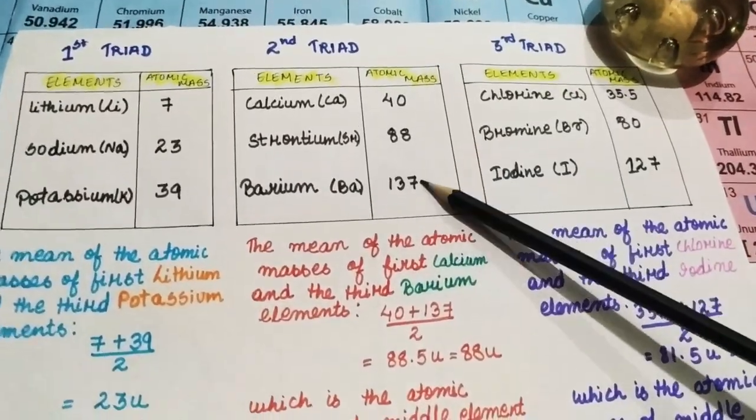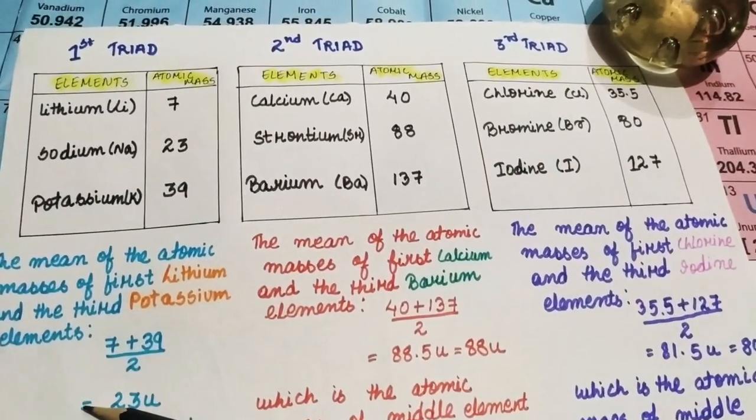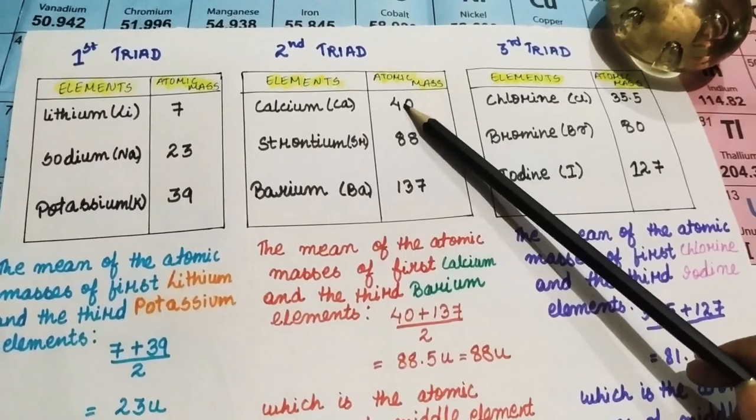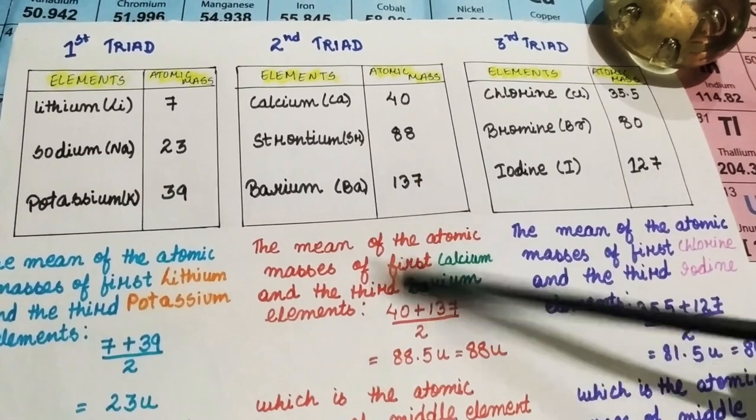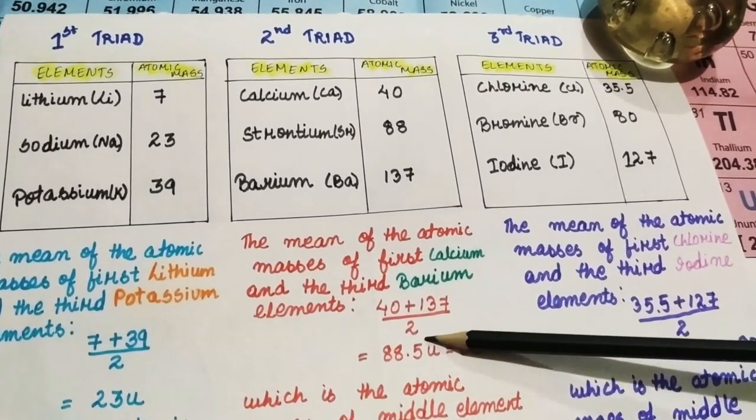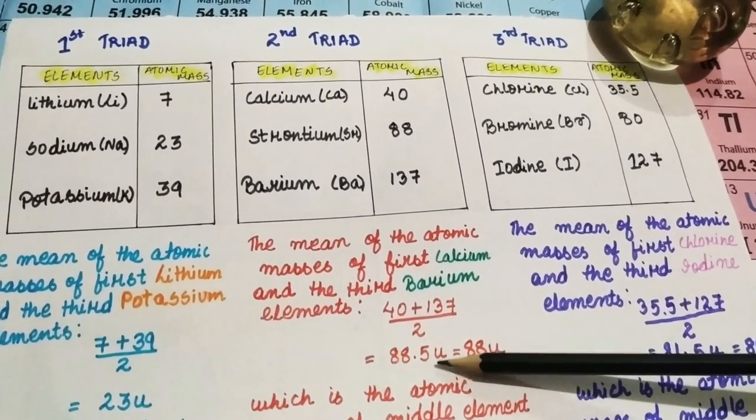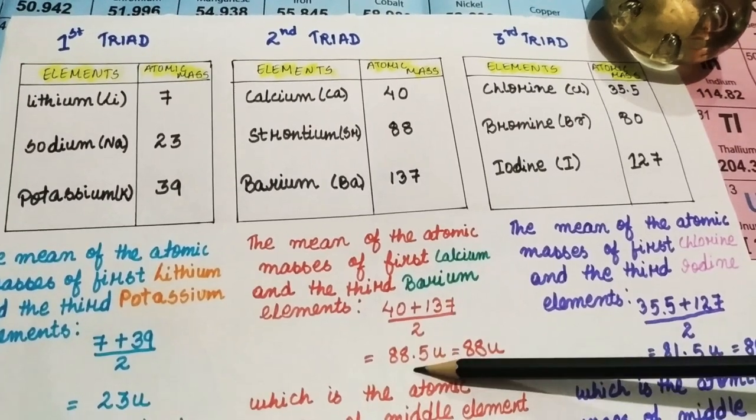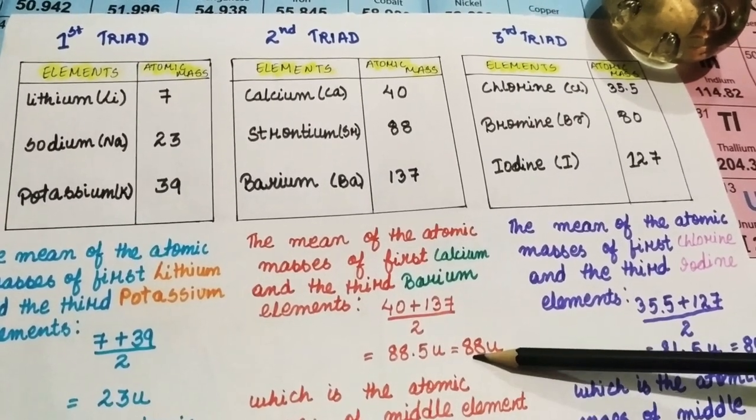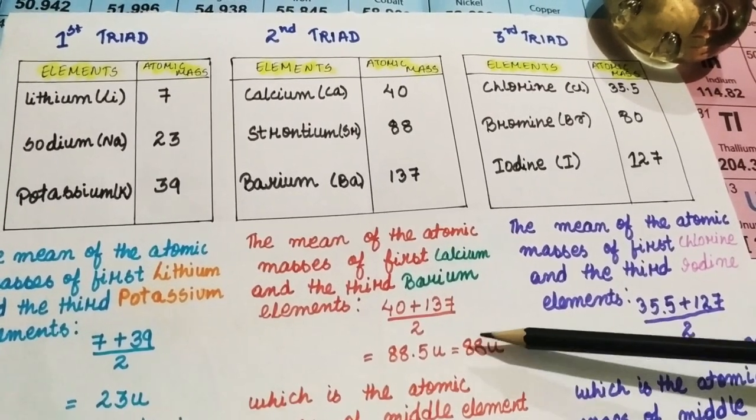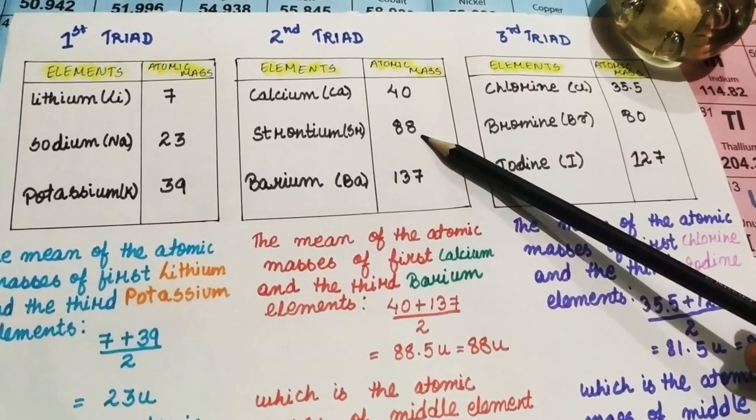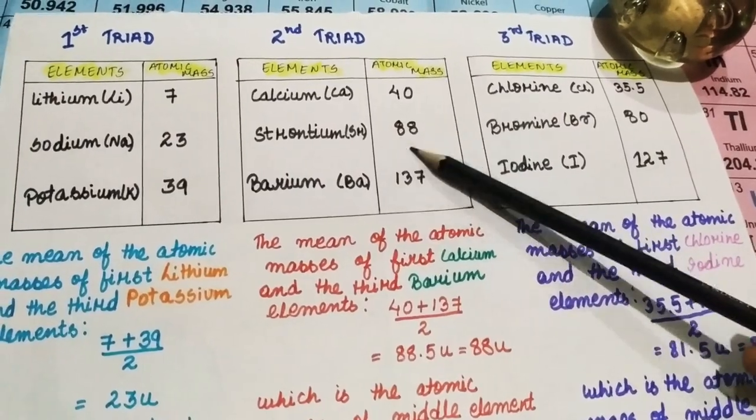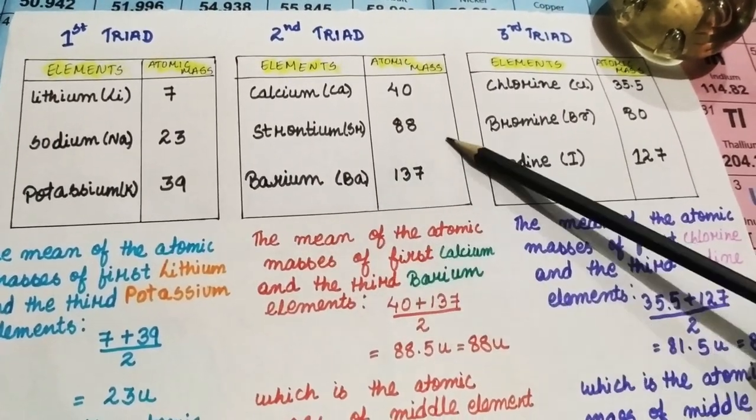Here, in the second triad, when we see, calcium's atomic mass is 40, barium's atomic mass is 137. When we add it and divide it by 2, we get 88.5, which on average can be taken as 88. So, we can clearly see that this is the atomic mass of the middle element, strontium, it's 88. So, his statement is valid here too. His second triad is correct.